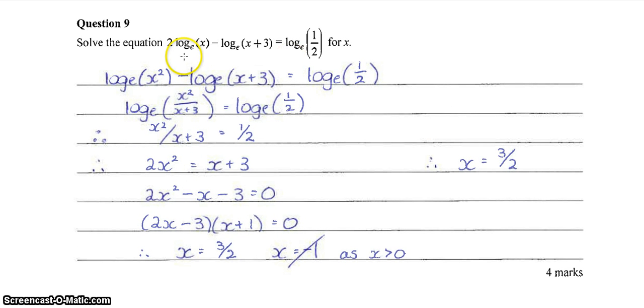Question nine, a straightforward log equation, really not too difficult. If we start by taking the two up, we get log of x squared minus log of x plus three. You could take this over to the left hand side if you want, but I wouldn't bother. I just put these two logs together, you get that. And then we can drop our logs, giving us x squared on x plus three is equal to a half.